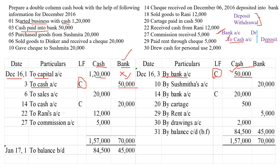Why are we writing C in the LF column? LF means ledger folio — the page number where the particular ledger account is recorded. But for these contra entries, separate ledger accounts will not be opened. To indicate that, we are writing C for contra in the LF column.